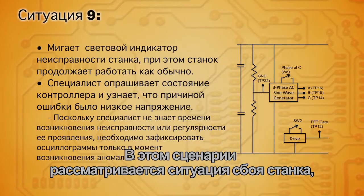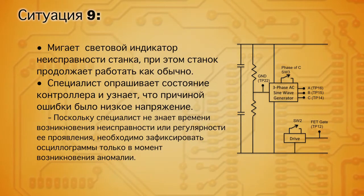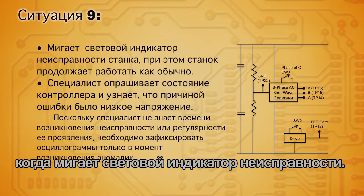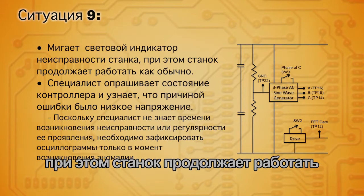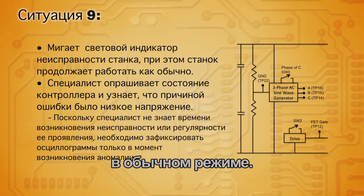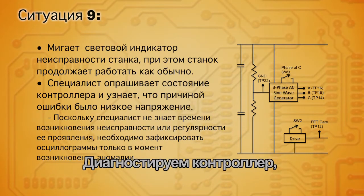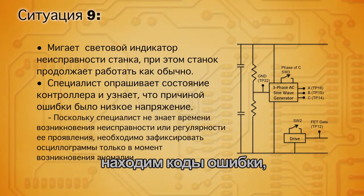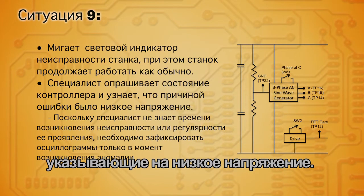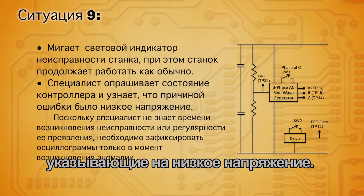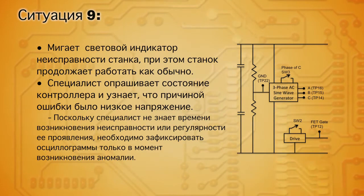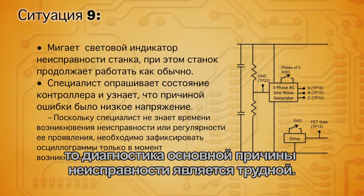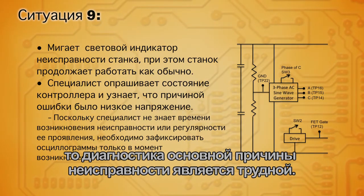Here we have a scenario where you have a critical machine with a fault LED flashing, but the machine is continuing to operate normally. Diagnosing the controller, you find the error codes indicate there has been a low voltage condition. Since you don't know when the fault occurred or how often it's happened, it's difficult to diagnose the root of the problem. This is one of the most frustrating circumstances for an engineer — these random events that cause an error but allow for otherwise normal operation.